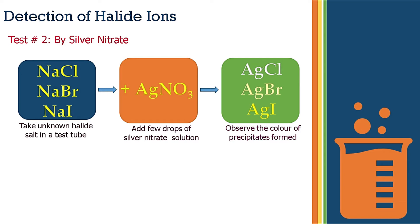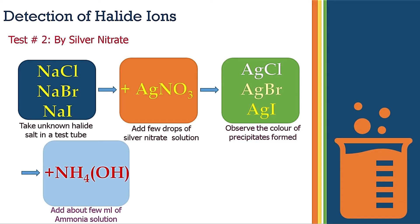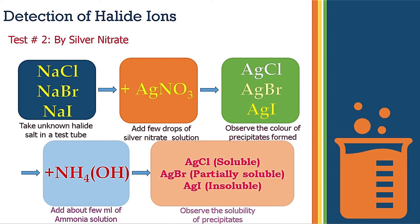You can further confirm the result using ammonia solution. Add a few ml of ammonium hydroxide to the precipitates. White silver chloride precipitates will become completely soluble in ammonia solution. Silver bromide precipitates — the creamy yellow ones — will be only partially soluble. Silver iodide precipitates — the deep yellow ones — will remain insoluble in ammonia solution.